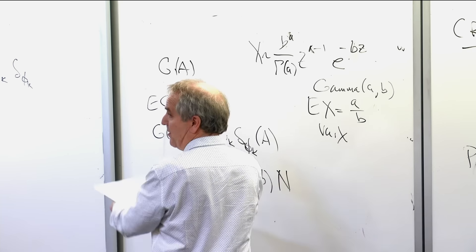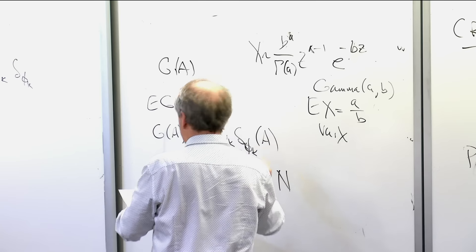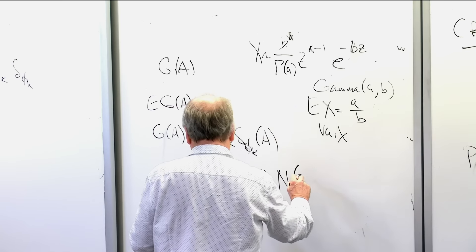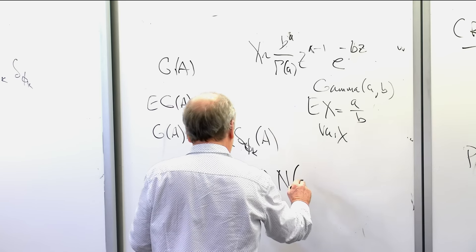This Lévy-Khinchin result gives a Laplace transform of an object defined by integrating against an underlying stochastic process — exactly the kind of thing we want to do in Bayesian analysis all the time: take an underlying stochastic process, find an integral or a marginal, find its distribution.